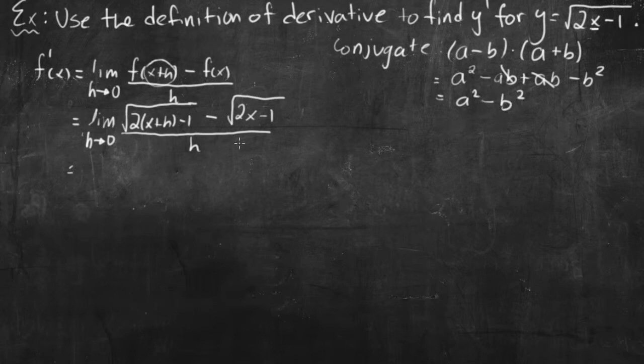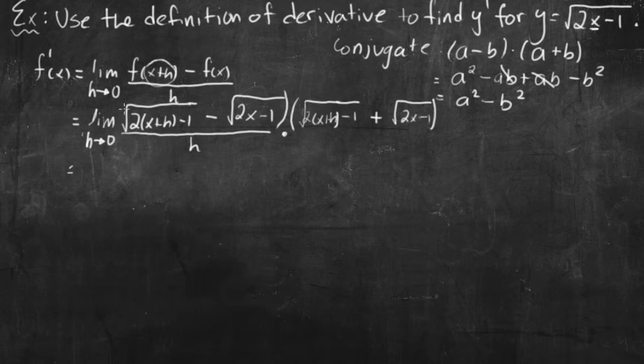So we're going to conjugate this guy over here. What I have to do is multiply the top and bottom by this with a plus sign. So it can get a little messy, so I'm going to write small: square root of 2x plus h minus 1. This doesn't change underneath here at all, just the plus sign. That changes to a plus sign. And then square root of 2x minus 1. I'm going to write this in brackets, and then I'll write this guy in brackets, and put that over.